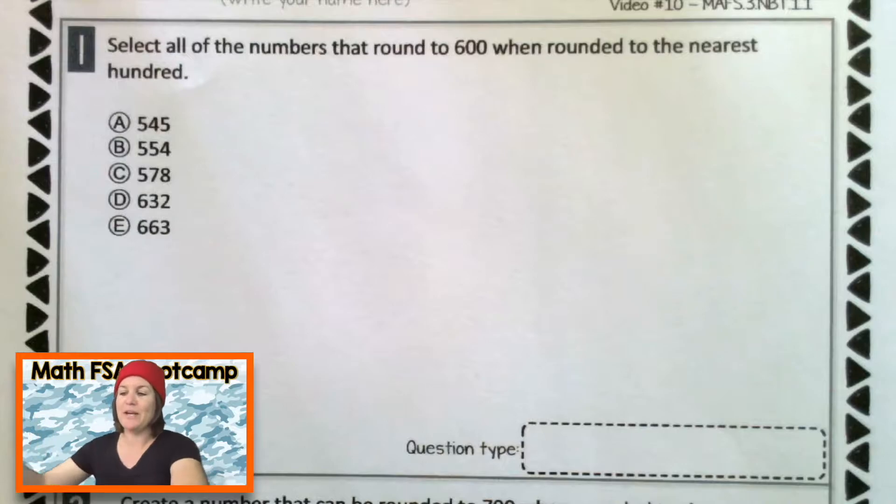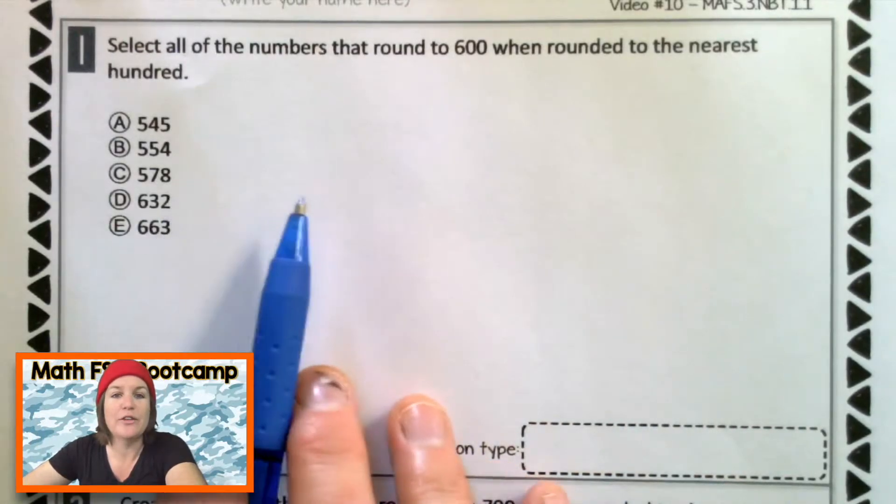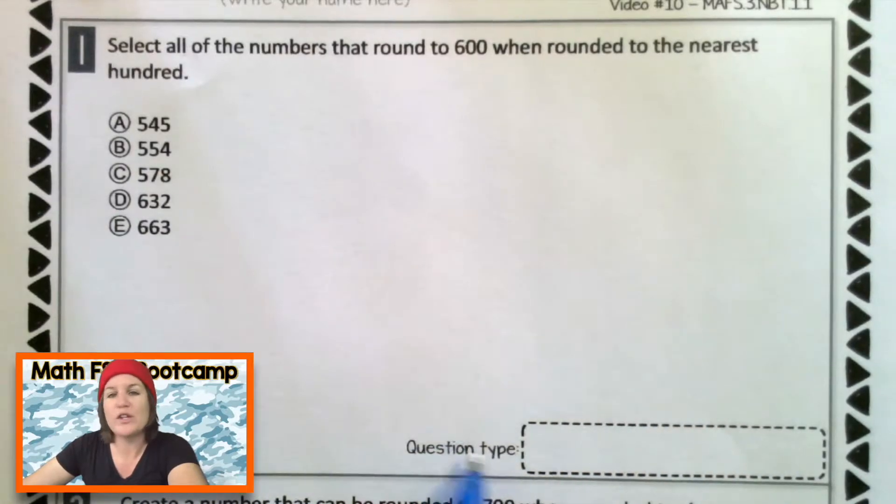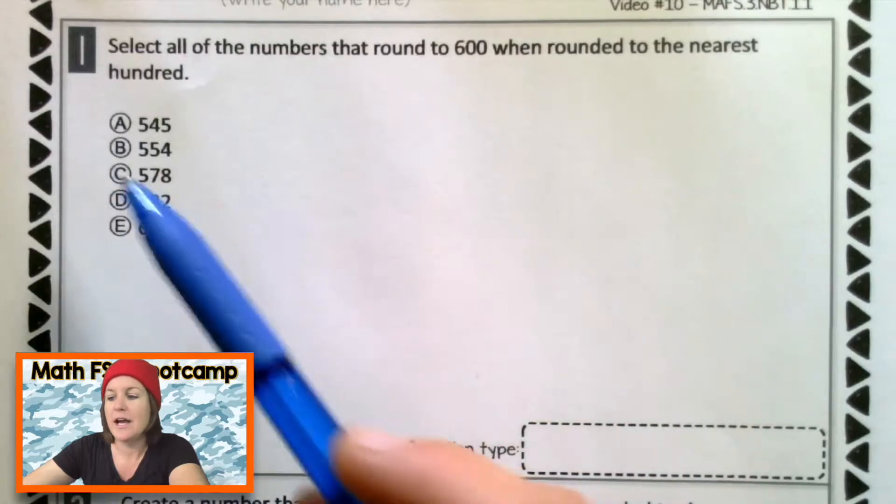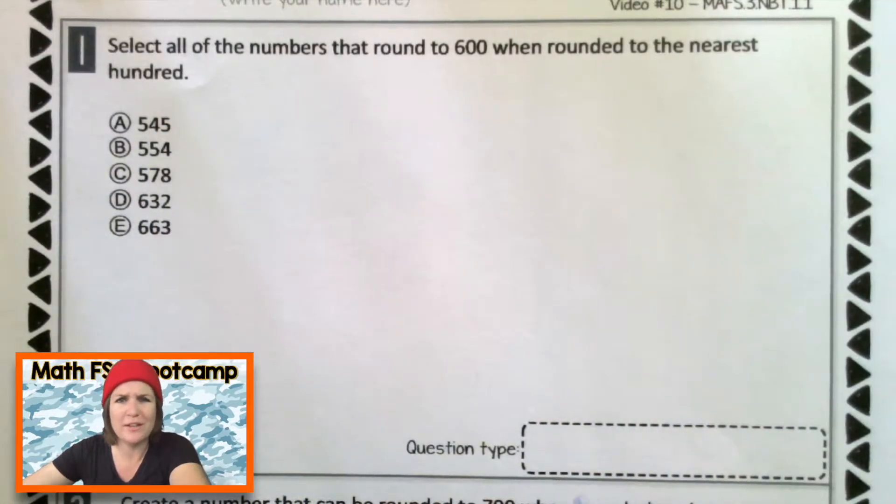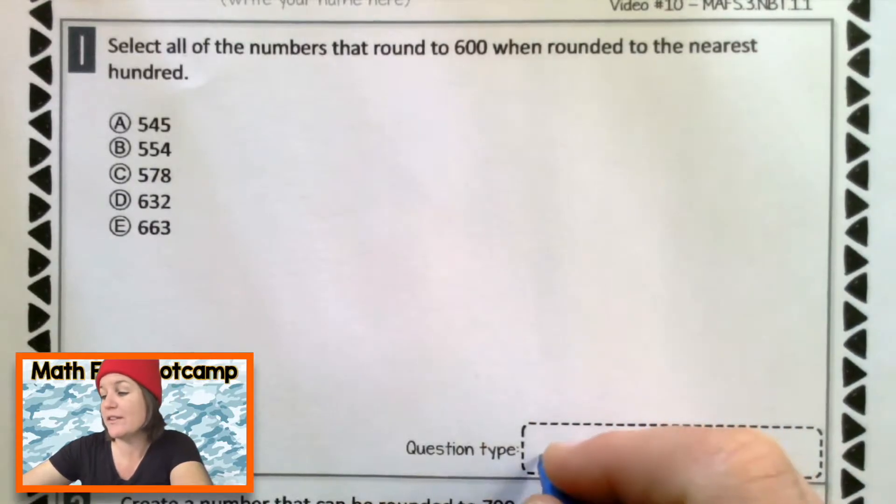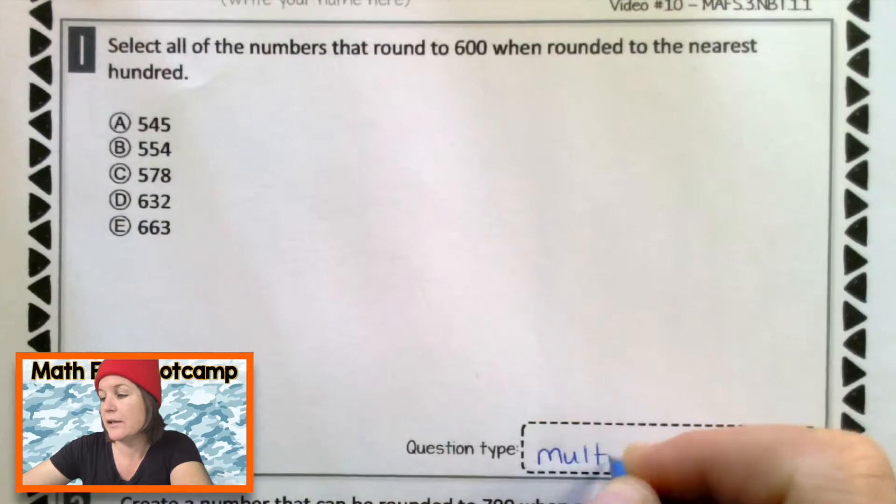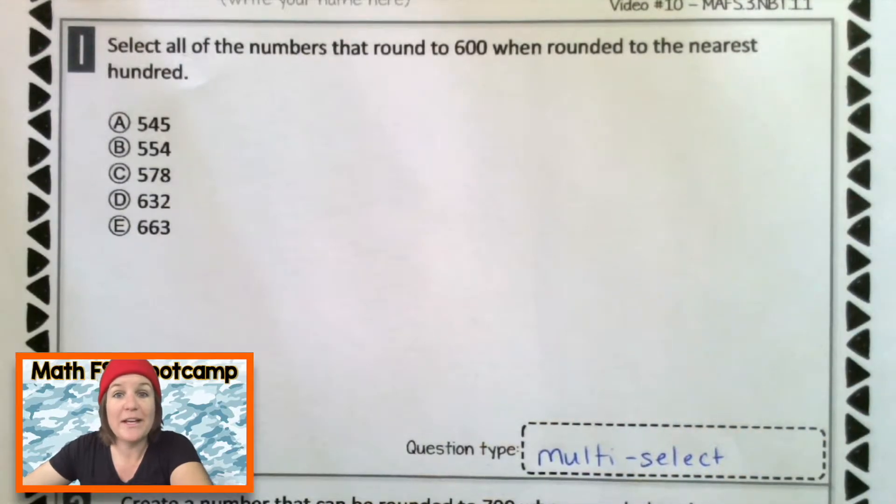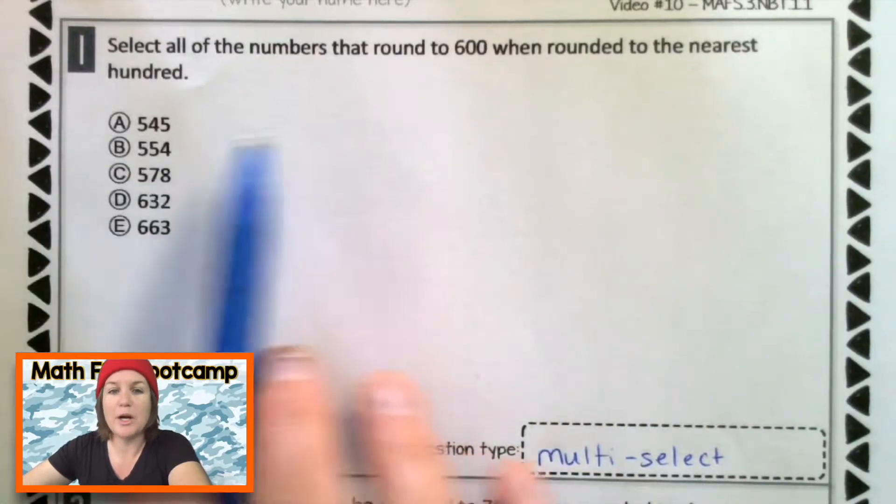Welcome back, everybody. So before we even tackle this problem, let's just give it a little scansy poo and see what question type this is. Now, I'm seeing select all. I'm seeing five answer choices. So what kind of question do you think this is? Yeah, it's a multi-select question. Let's write that down if you did not already. Multi-select. Awesome.